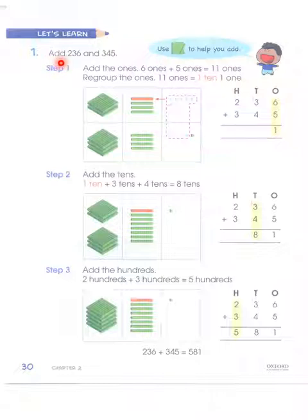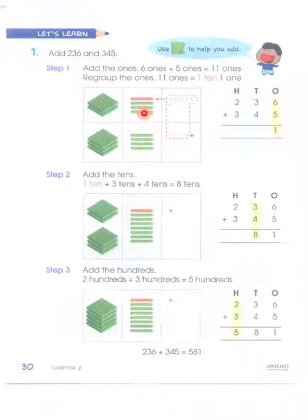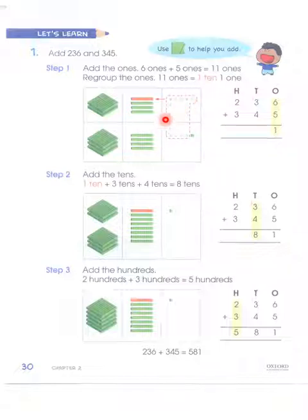We have to do this with the help of these green sheets. Every green sheet has 100 squares in it. So we have 1, 2 — 200 — and then 30 squares, which means 3 tens. So we have 2 hundreds, 3 tens and 6 ones. Similarly, we have to add 3 hundreds, 4 tens and 5 ones.